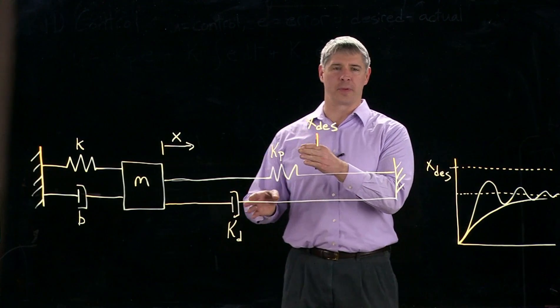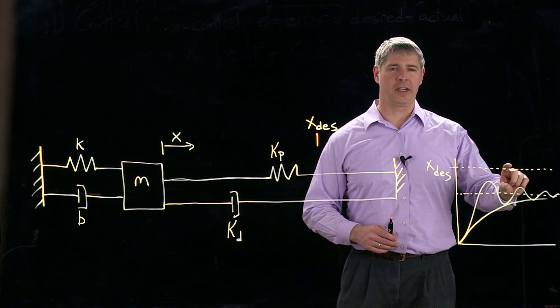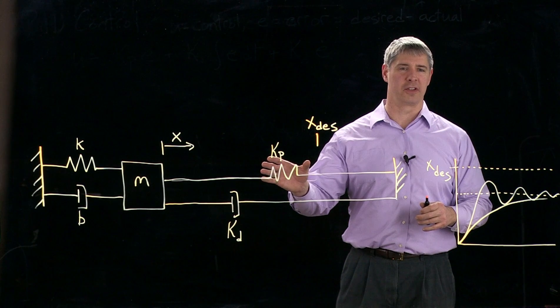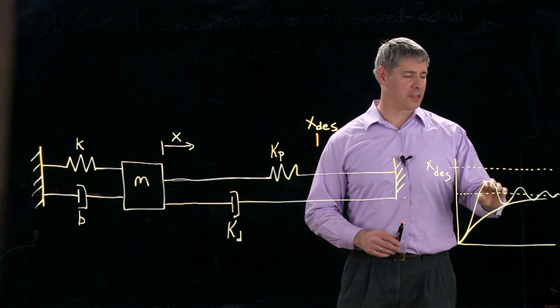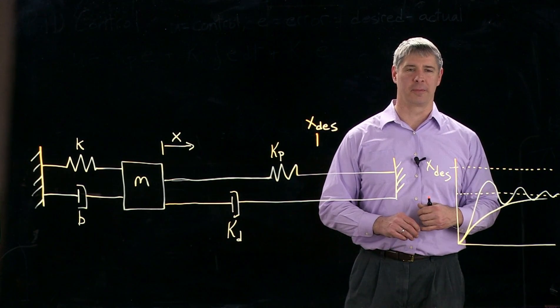Now we could increase both K sub P and K sub D, make it stiffer and increase the damping. That would decrease the steady state error because we don't need to have as much extension of this spring to get the same force out of it. So that would allow this to come up closer to X desired, but it won't be able to get rid of all the steady state error completely.